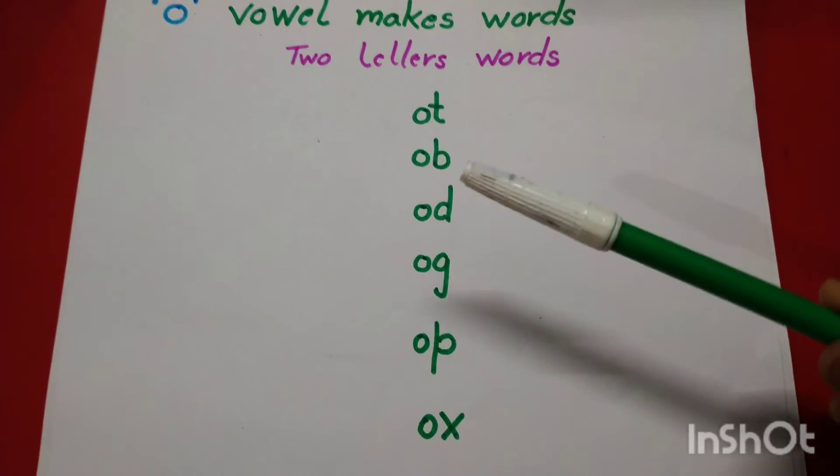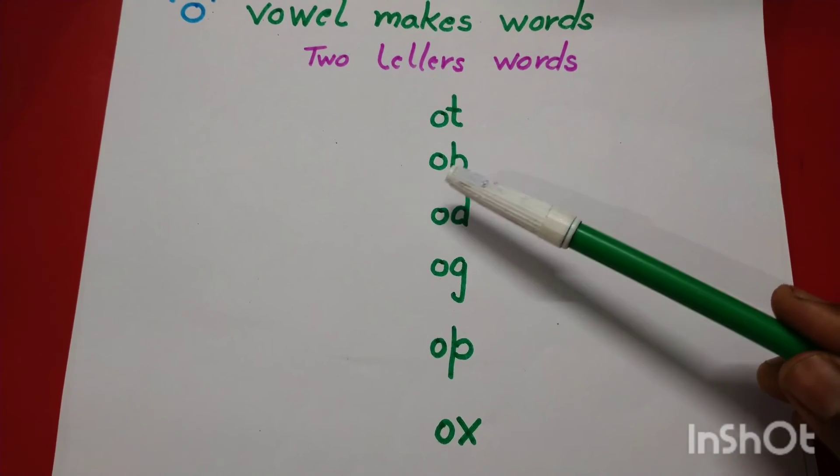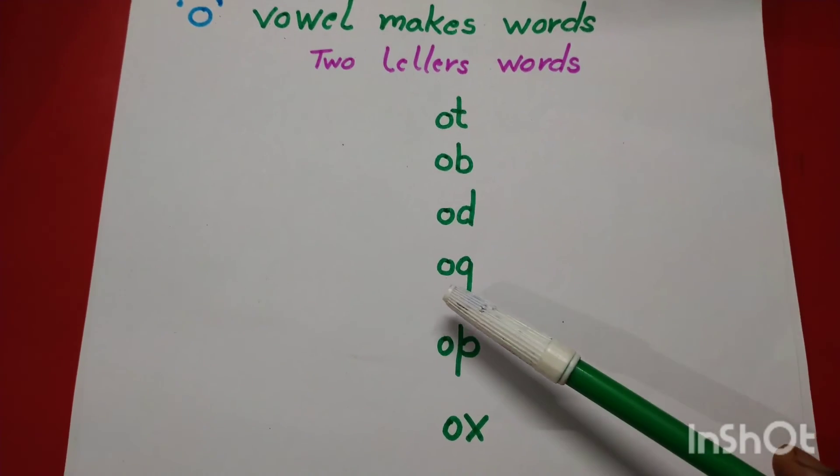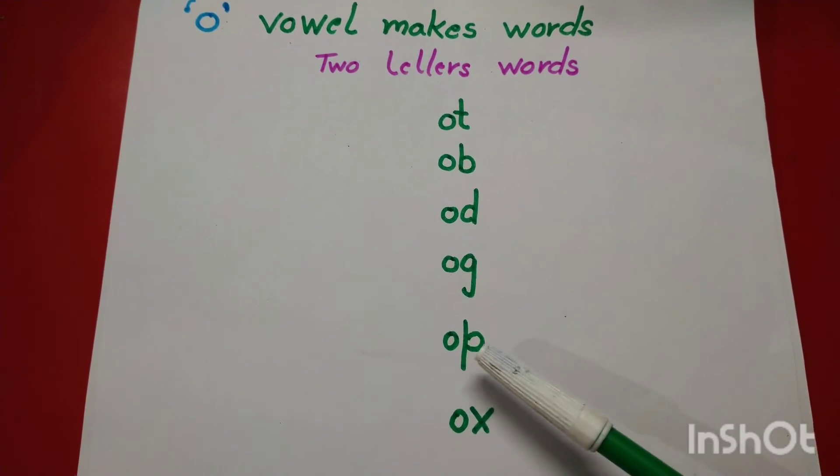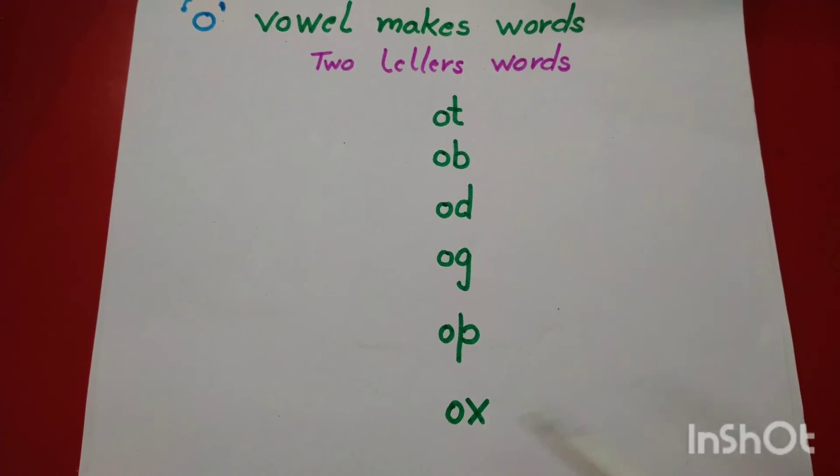now repeat O, T, O, T, O, B, O, O, D, Odd, O, G, Og, O, P, O, O, X, Ox.